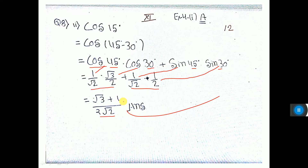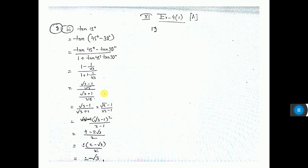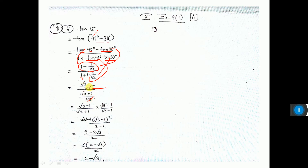Part 3: tan 15°. This can be written as tan(45° - 30°). Using the tan(A - B) formula: (tan A - tan B) / (1 + tan A · tan B). Now substituting values: tan 45° = 1, tan 30° = 1/√3. Taking LCM of √3 in the numerator gives (√3 - 1)/√3, and in the denominator (√3 + 1)/√3. The √3 cancels, leaving (√3 - 1) / (√3 + 1).